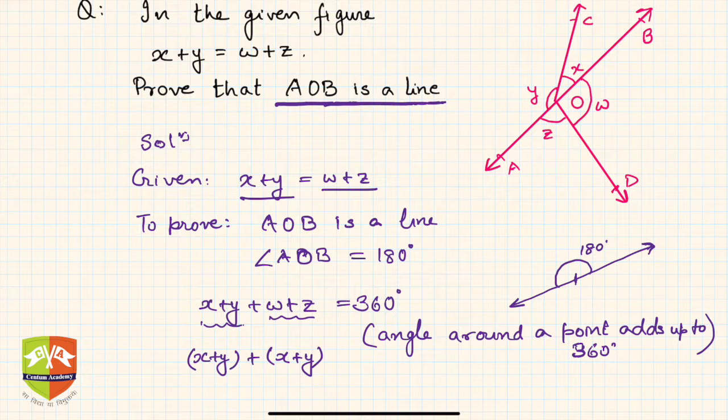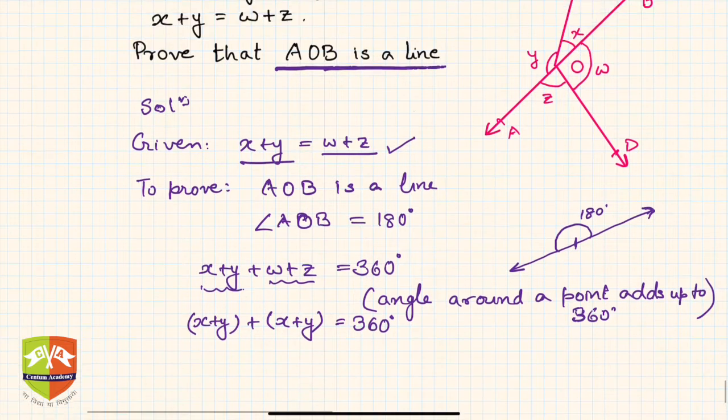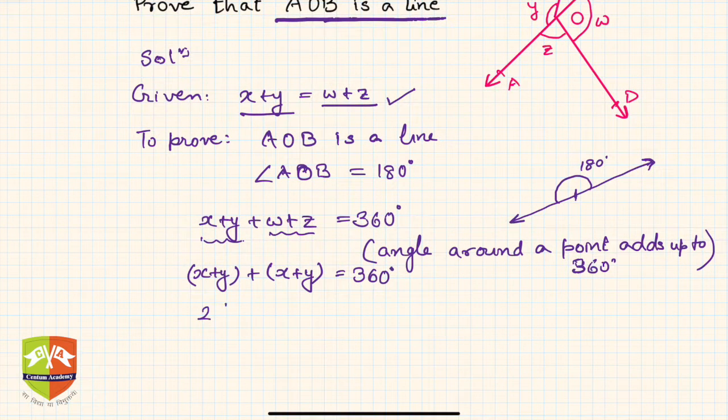And this equals 360 degrees. So hence, I can write 2 times (x plus y) equals 360 degrees. So what will be x plus y? Simply 360 degrees divided by 2, which equals 180 degrees.